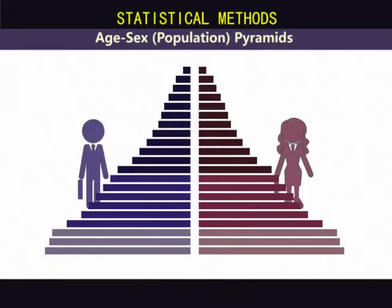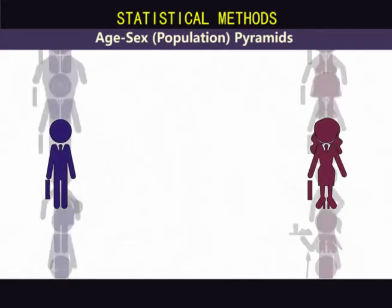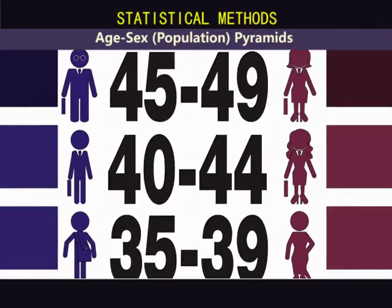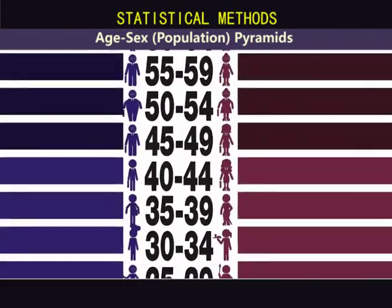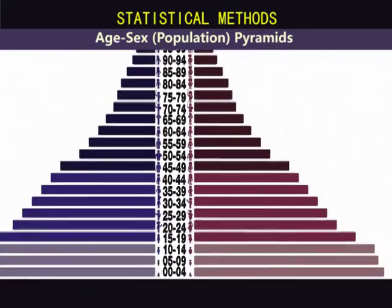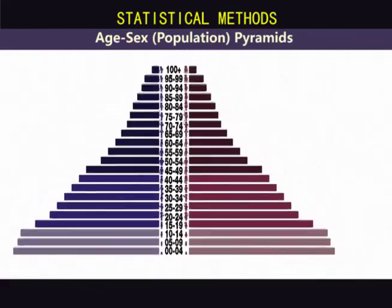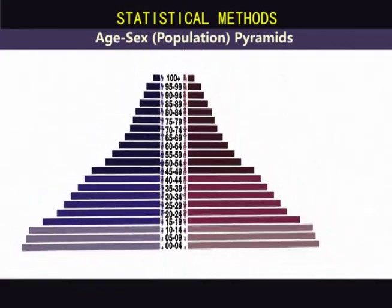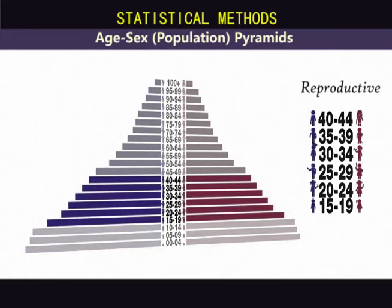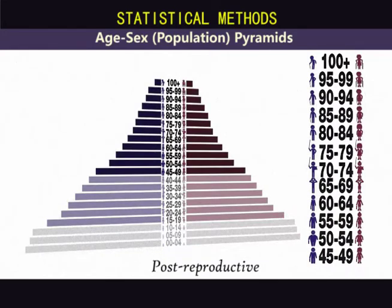The data is divided into gender, with females on one side and males on the other. Population numbers are shown for each five-year interval, starting with 0 to 4 years and continuing to 100 and above years. These intervals are grouped together into pre-reproductive (0 to 14 years), reproductive (15 to 44 years), and post-reproductive (45 and above years).